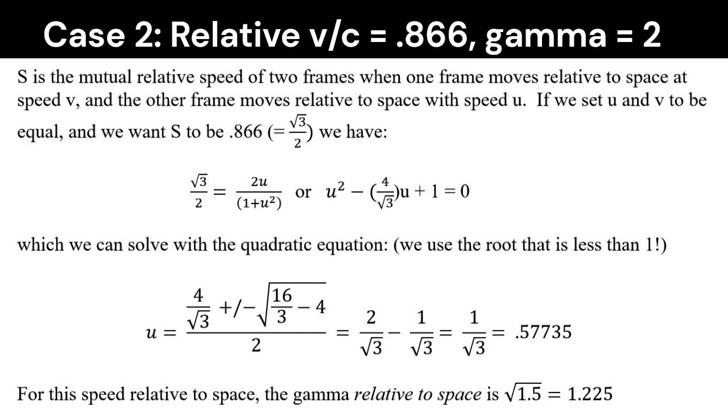Now we know that for any given relative velocity, say we stick with 0.866 v over c, there's an infinite number of ways to get to that relative velocity, frames going at different speeds through space.